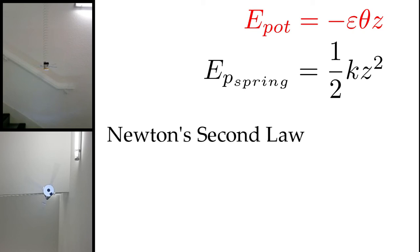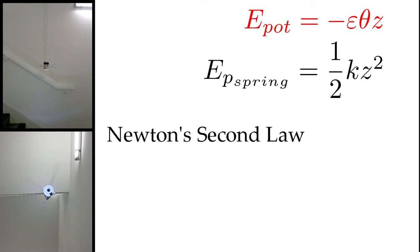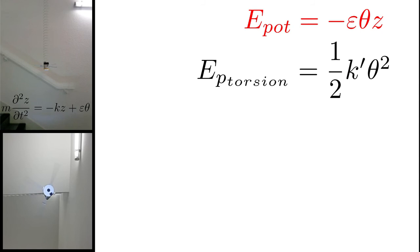Now that we have found all the potential energies, we can proceed to the fundamental principle of dynamics. The mass times the second derivative of z equals the force due to the spring, plus the term that follows the differentiation by z of the potential energy of coupling.